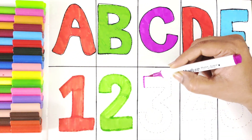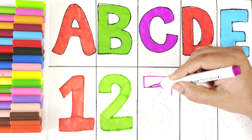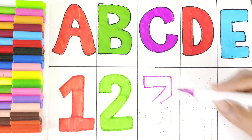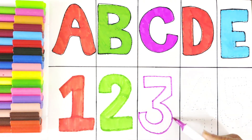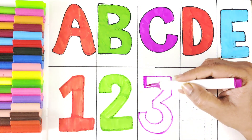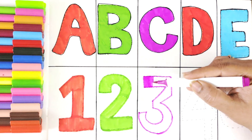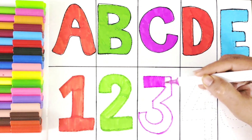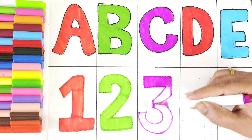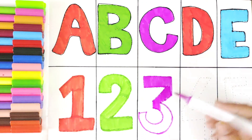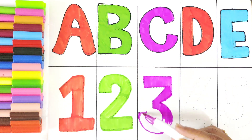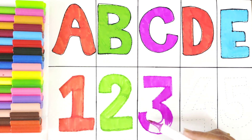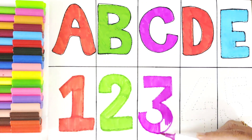Let's fill pink color in the number 3. We should always sketch the border on the dotted line — we can use any color. I have used pink color in number 3. I like pink color. Our number 3 is ready.